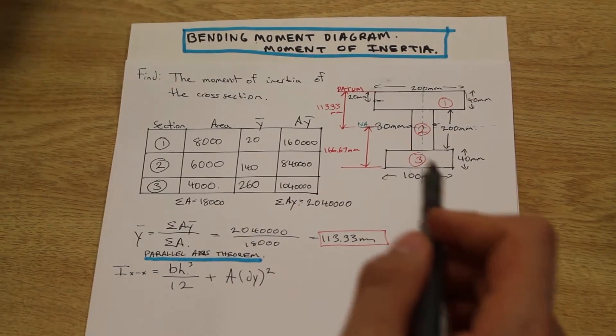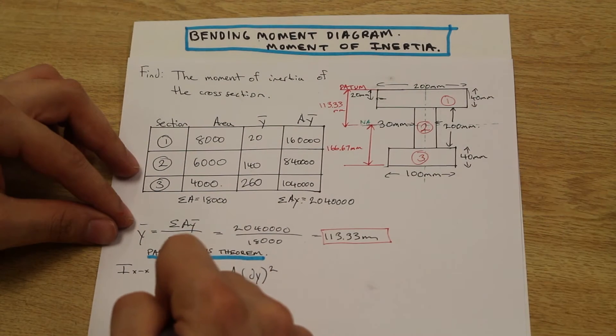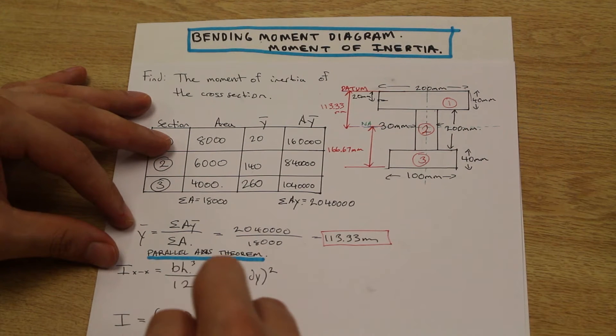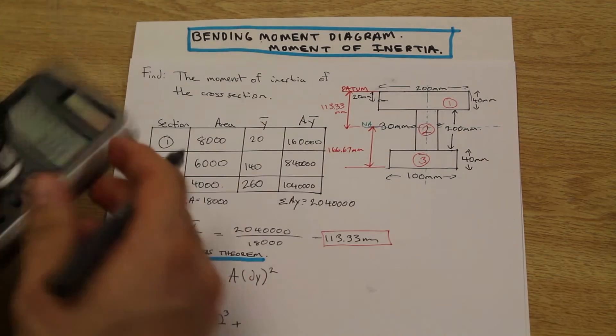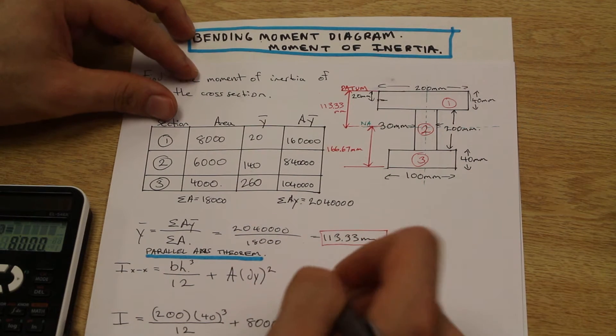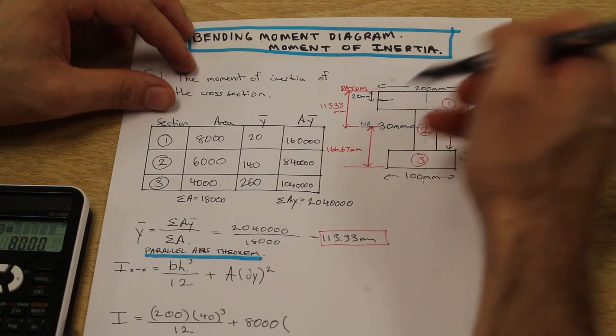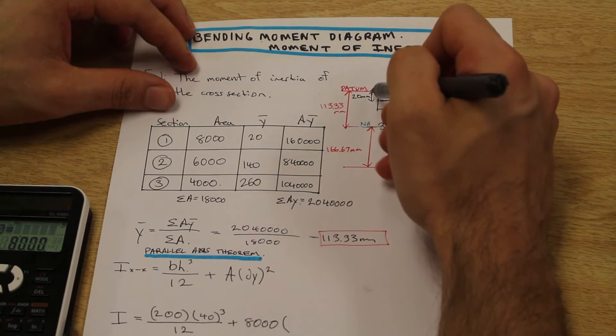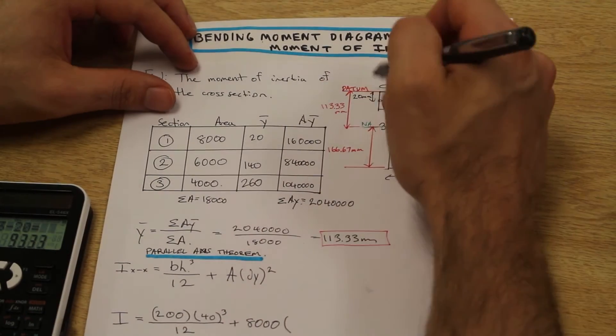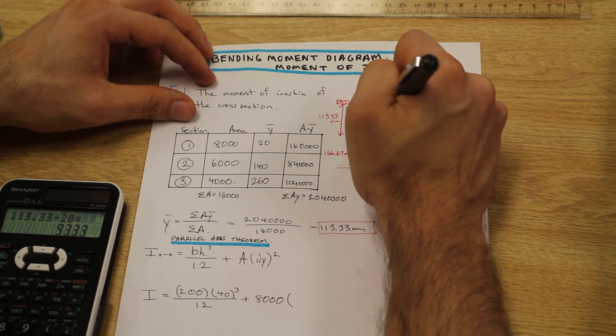Where should we start? Let's start with section one. So section one we have the base which is 200 millimeters times the height cubed, the height is 40 millimeters, divided by 12. What's the area? 8,000, just as we found over here. And what's dy? So dy is the distance from the centroid of the shape, which is at 20 millimeters from the datum, to the neutral axis. We found the distance from the neutral axis to the top was 113.33 millimeters. So we're going to subtract 20 from that, which gives us this distance here of 93.33 millimeters.